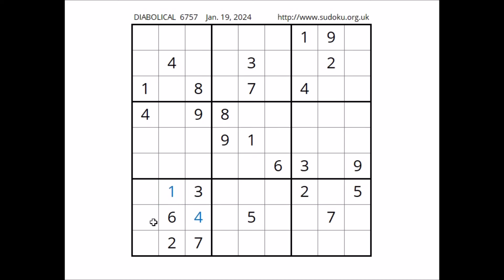Okay, look — number 5. 5 cannot be here, 5 in the row. 5 cannot be here, 5 in the row. Number 5 in this place.